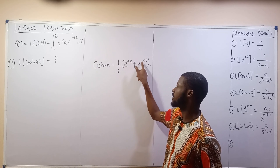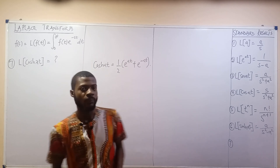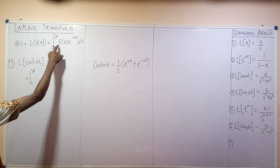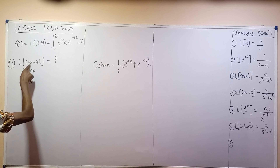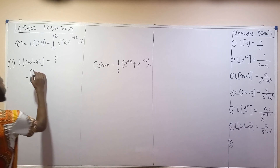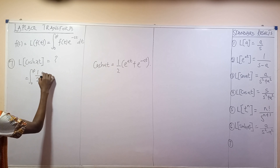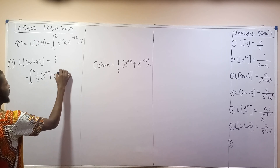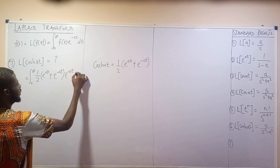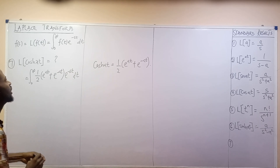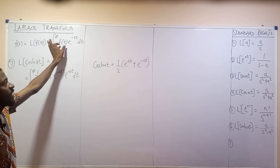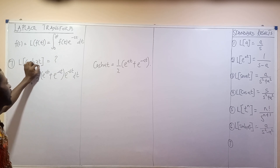So this becomes the integral from 0 to infinity. Our f(t) becomes cosh(at), and cosh(at) equals 1/2 times [exponential(at) plus exponential(−at)], multiplied by exponential(−st) dt. I simply substituted f(t) = cosh(at) into the Laplace transform formula.